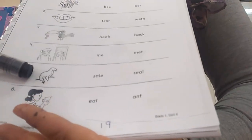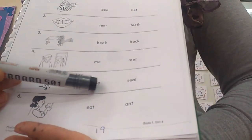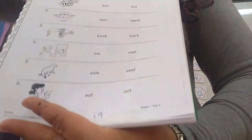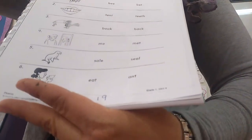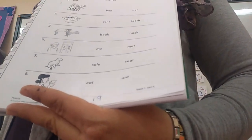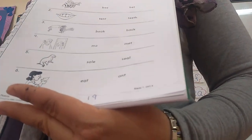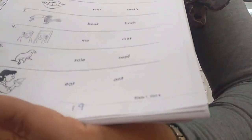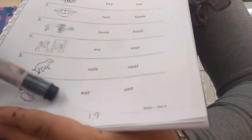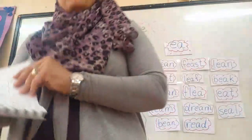Number five — what is this animal? Is it 'sale' or 'seal'? Of course it's seal. Sale is when we go to the shop and there is a sale, so I buy it at a lower price. Then this girl — what is she doing? Is it 'eat' or 'ant'? Of course, eat. This is a very easy page.